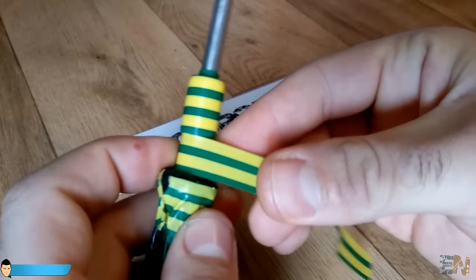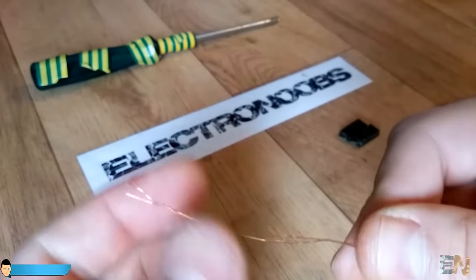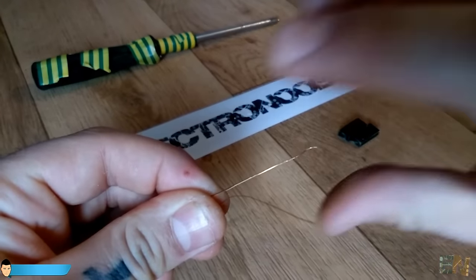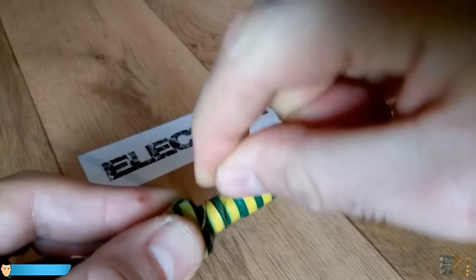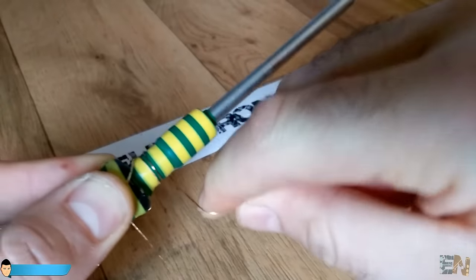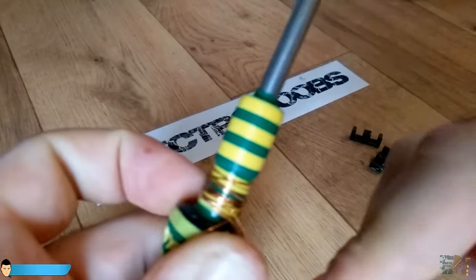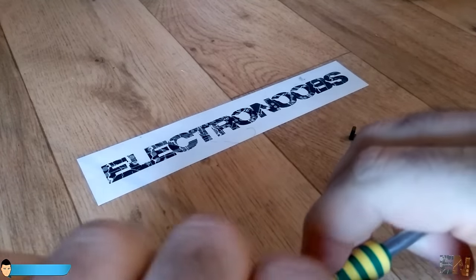Now for the first and flyback coils, we will use 0.2 and 0.4mm copper wire. Wrap together 2 wires at one end. First, wind the primary coil in one direction. It will only have 5 windings. Now wind the flyback coil in the opposite direction. It should have about 10 to 12 windings.